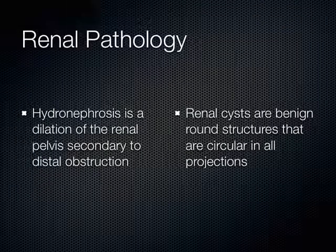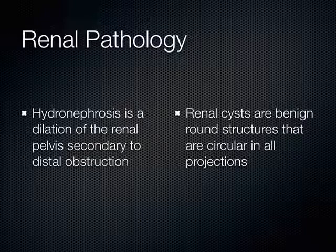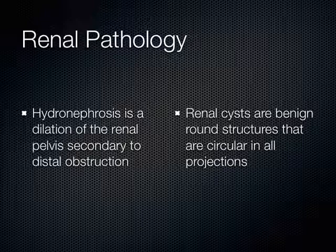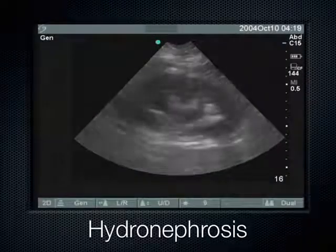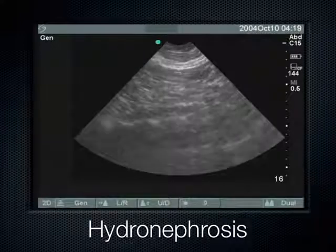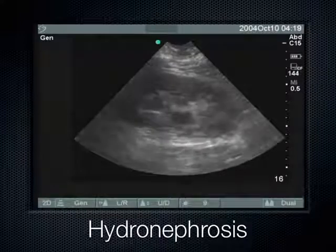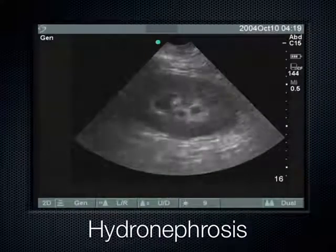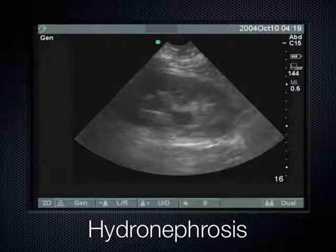When looking at a kidney we break it into whether we see something out in the cortex or in the collecting system — also called the renal pelvis or renal sinus. If something in the cortex is anechoic and spherical in all dimensions, it's a renal cyst. But if you see anechoic fluid in the center or pelvis of the kidney, that's hydronephrosis — fluid building up. This is what mild hydronephrosis looks like: a glove-like formation splaying out in the center, the pelvis with fingers extending toward the cortex.